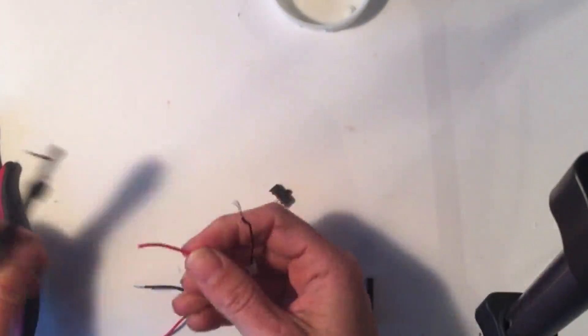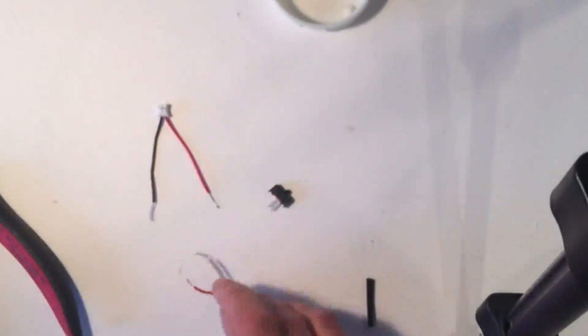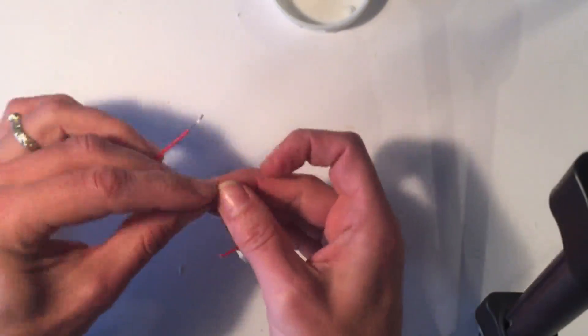Strip the wires, slip on some heat shrink, and splice your black wires together.